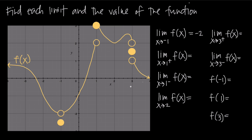Let's find x equals 1 on the x-axis — that vertical line here is x equals 1. We're interested in the limit as x gets really, really close to that line from the positive, or right-hand, side. Tracing the graph from the right and approaching x equals 1, we get close to the value y equals 3 on the y-axis. So the limit as x approaches 1 from the positive side is 3.